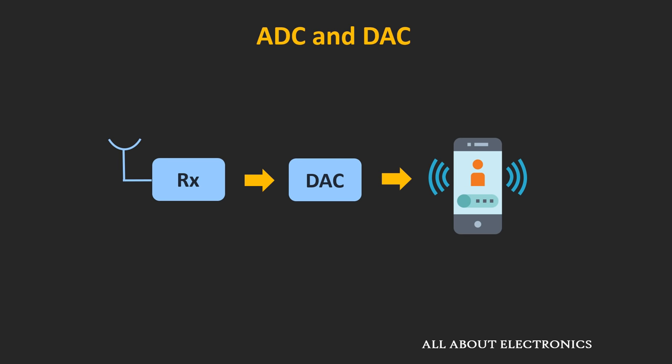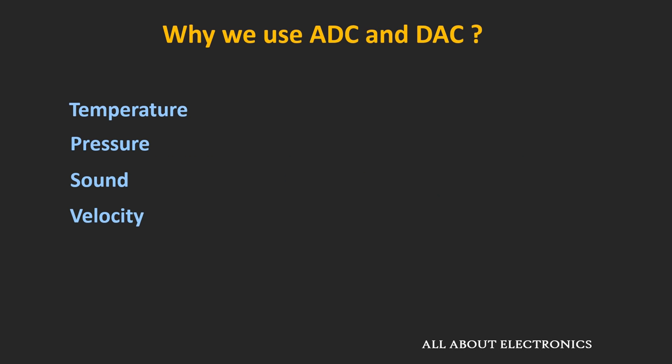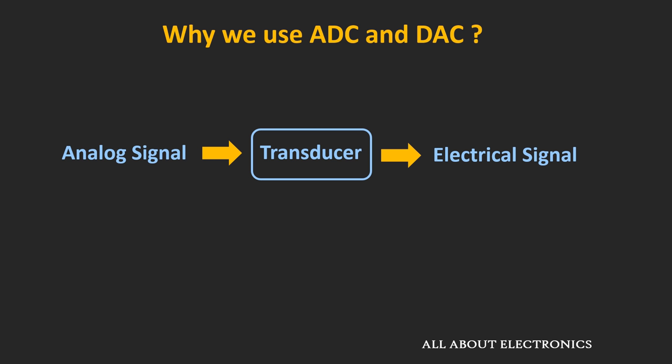The question arises: why are we using ADC and DAC, and what is the need of converting signals back and forth between the analog and digital domain? Most of the signals we find around us are analog in nature — for example, temperature, pressure, sound, or velocity. Using a transducer, this analog signal is converted into an electrical signal, but these signals still remain analog in nature.